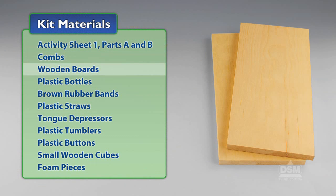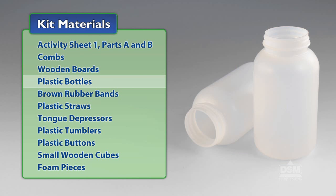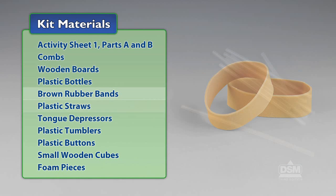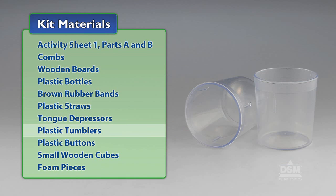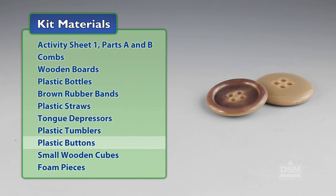Combs, wooden boards, plastic bottles, brown rubber bands, plastic straws, tongue depressors, plastic tumblers, and plastic buttons.